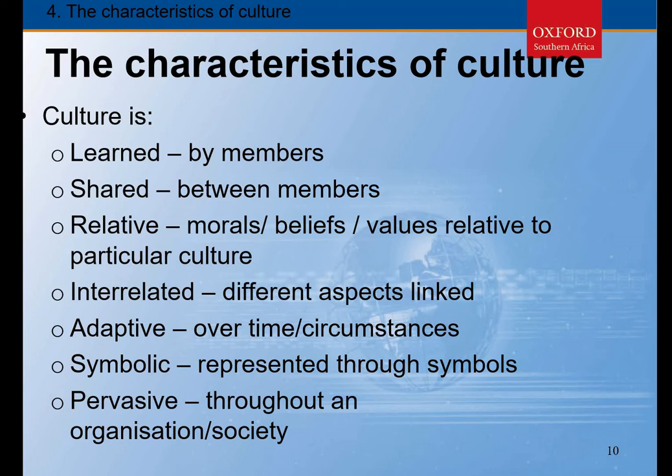Sixth, culture is symbolic — it has symbols, things we can identify people by: physical attributes or characteristics, clothing, the way in which we speak, our architecture, our taste in art — there are multiple symbols that identify culture. Finally, seventh, culture is pervasive — it is throughout a particular society, not something that occurs in isolation within a small group, but throughout broader society.